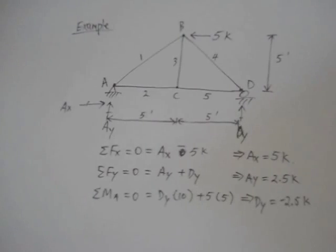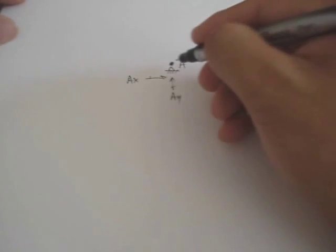So for example, let's draw joint A. Now joint A has a pin connection. It has the Ay, the Ax, and it also has the member force F2, and then member force F1.